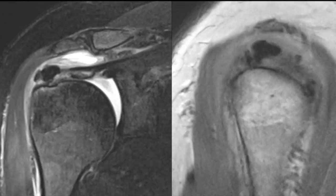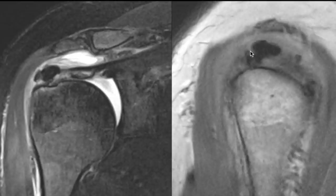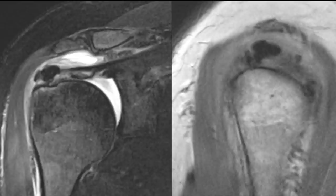Sometimes tendinosis is due to calcification, known as calcific tendinosis. Calcium appears hypointense on all sequences. In one case, calcium is seen at the enthesis of the supraspinatus tendon extending into the subacromial bursa, causing bursal inflammation with thickened bursal lining, fluid in the bursa, and deltoid edema. This represents acute exacerbation of calcific tendinosis or calcific tendinitis. These patients present with a classical history of sudden onset acute pain.